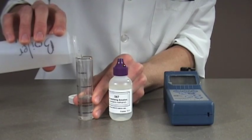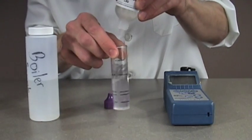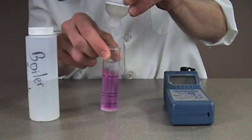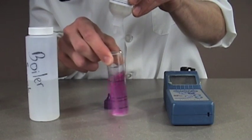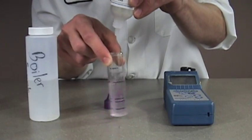To neutralize the sample, add 25 milliliters of boiler water to a test vial. Add neutralizing solution drop-wise until the sample turns pink and then back to the original color. If the sample does not turn pink after a few drops, there is no need for neutralization.